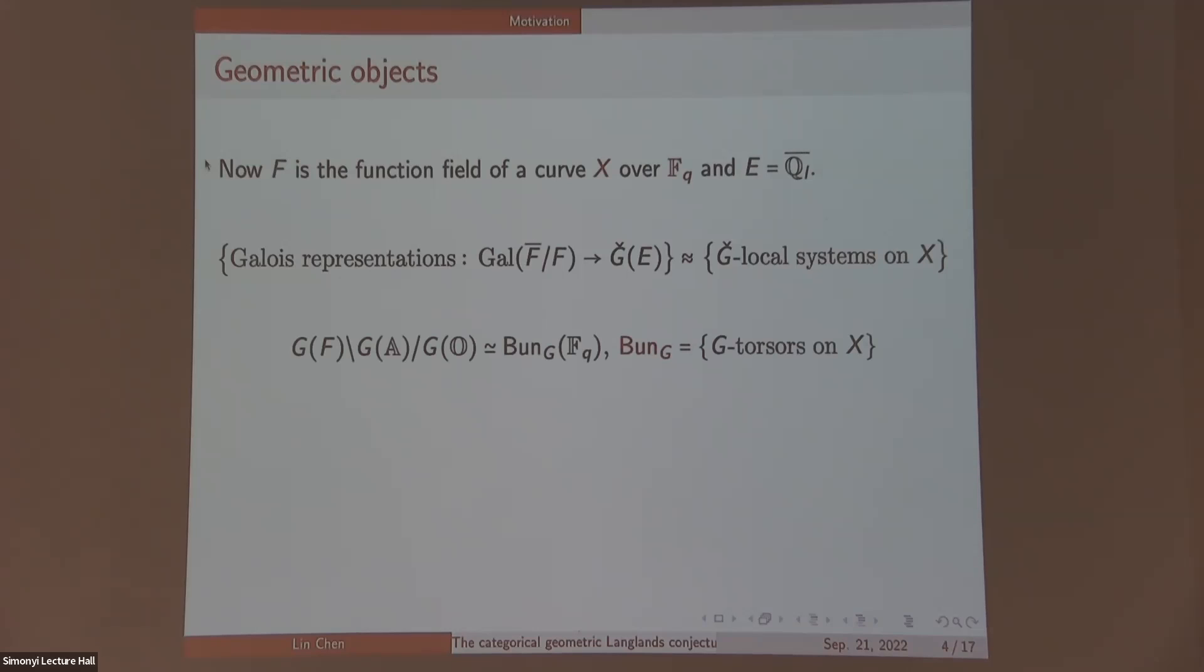Then let's look at the automorphic side. By a well-known theorem of Weil, we know that this double quotient is isomorphic to F_q points of Bun_G. Here Bun_G is the moduli stack of G-torsors on X. In the previous picture, we studied the functions on this double quotient. In other words, we studied functions on F_q points of Bun_G.